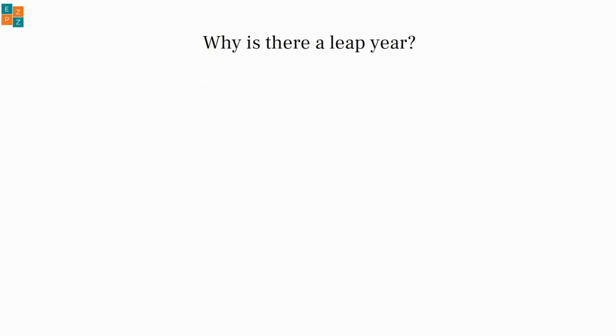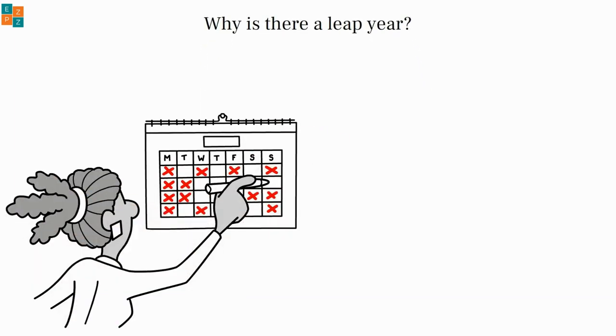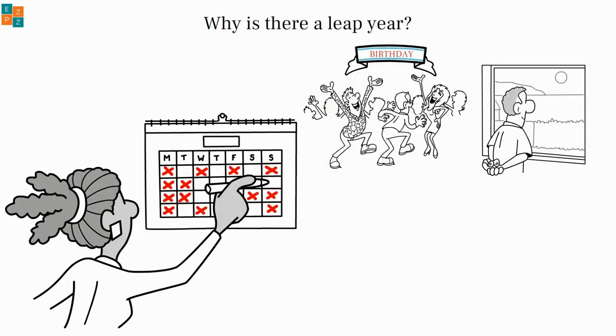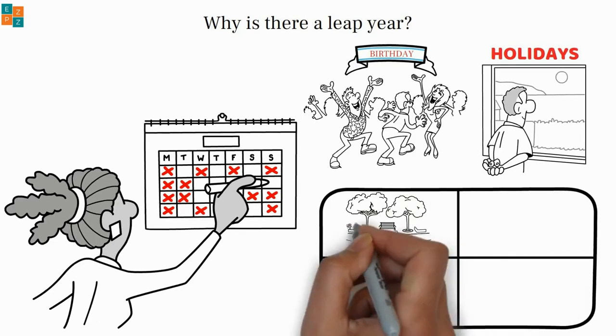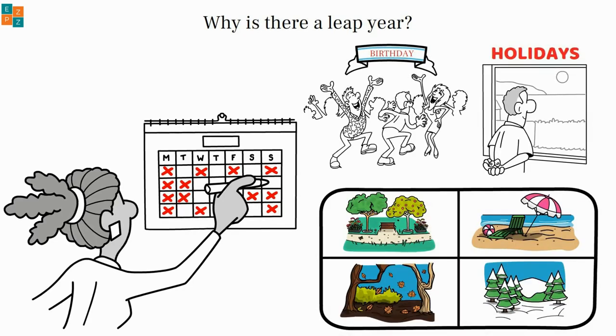Why is there a leap year? Our calendar is like a clock that tells us when to celebrate birthdays, holidays, and when to expect seasons like spring, summer, fall, and winter.